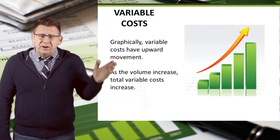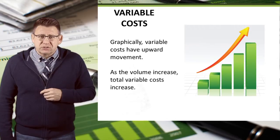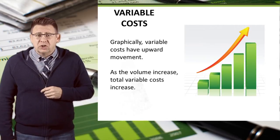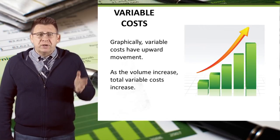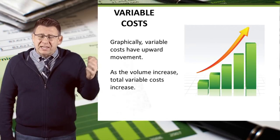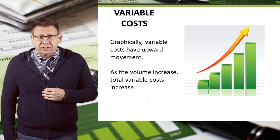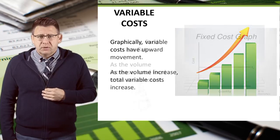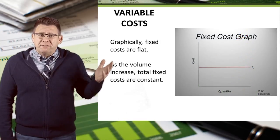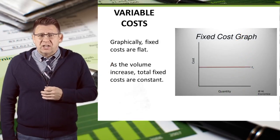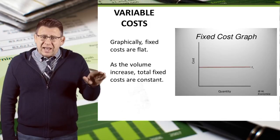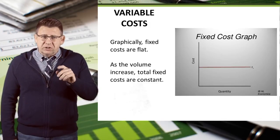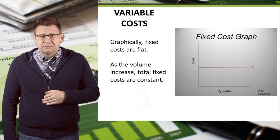This is what a variable cost graph would look like — it shows a movement upward as volume increases. This is what a fixed cost graph would look like — the movement is flat as volume increases.